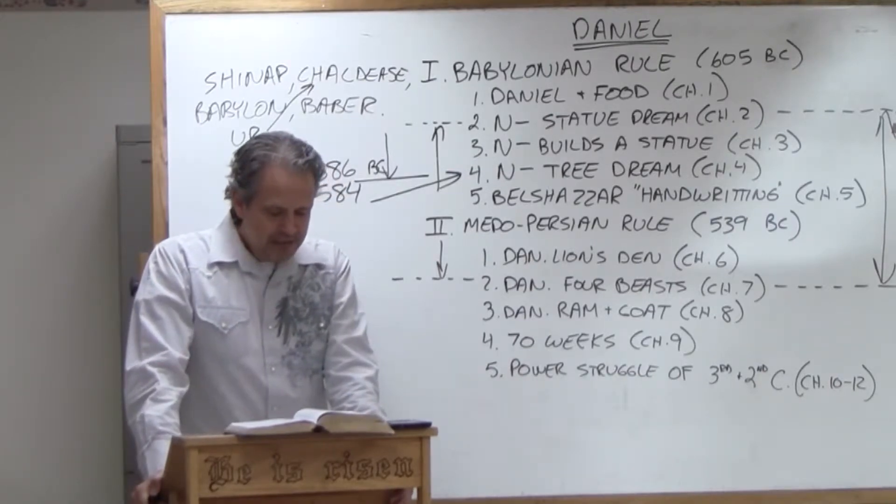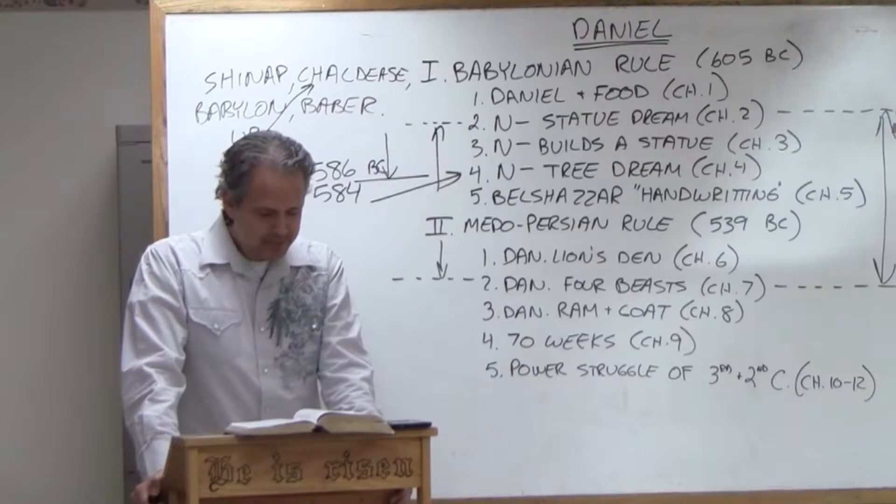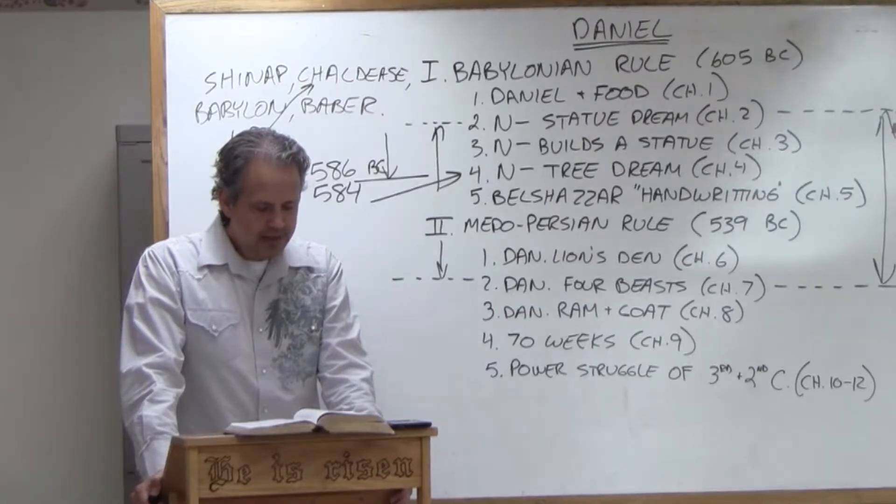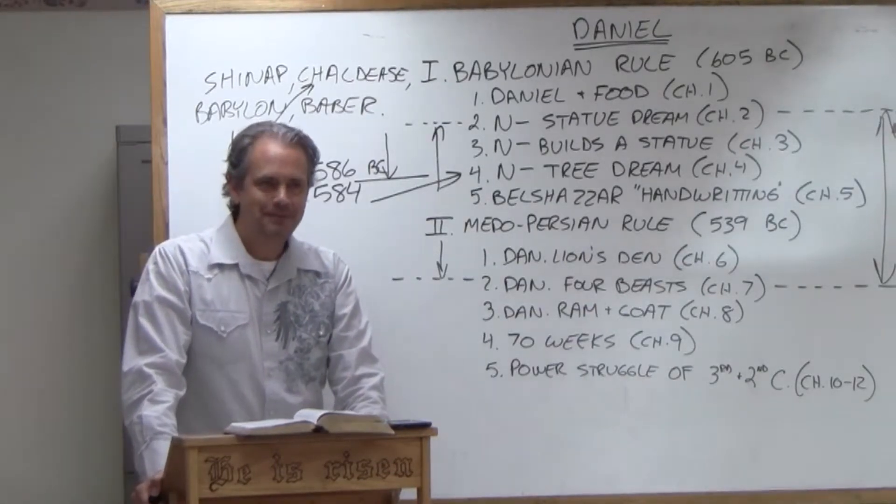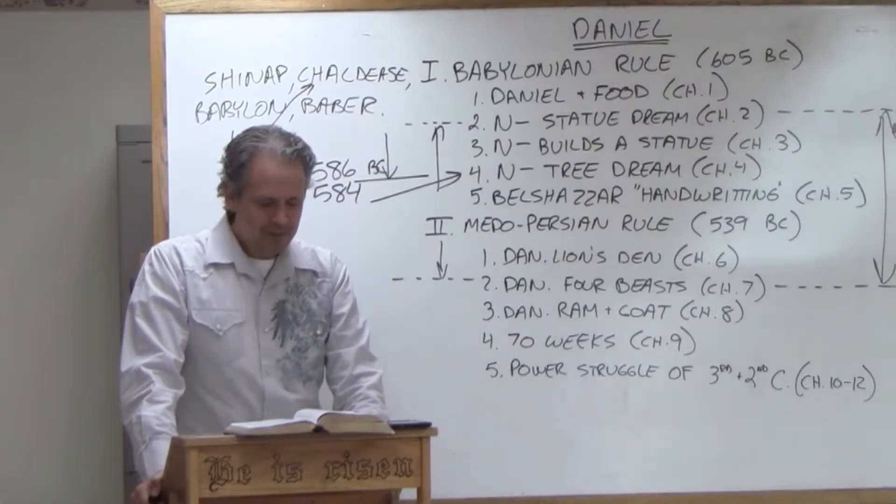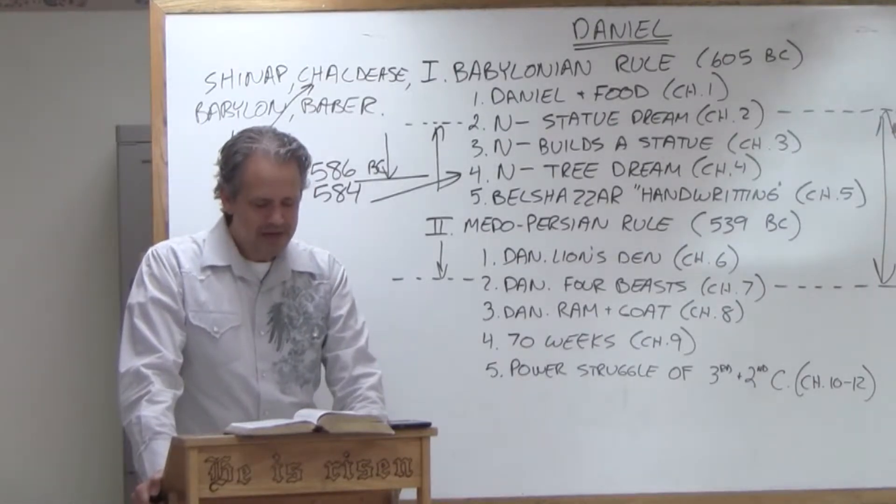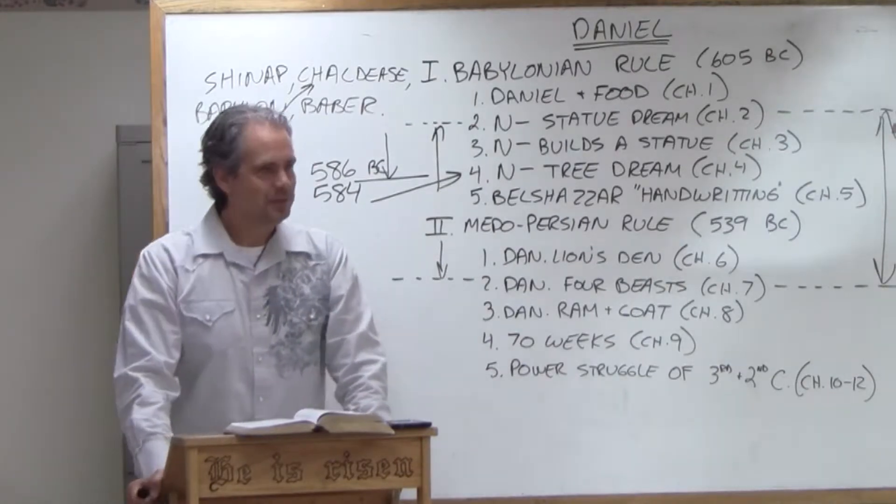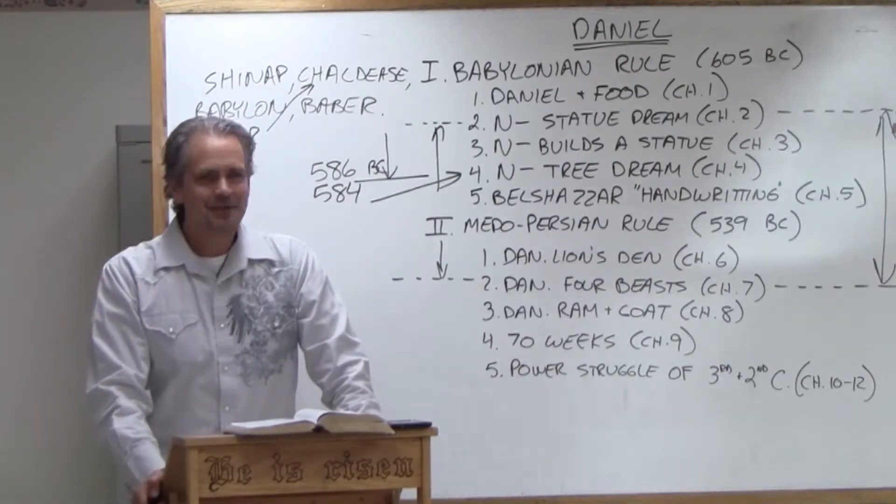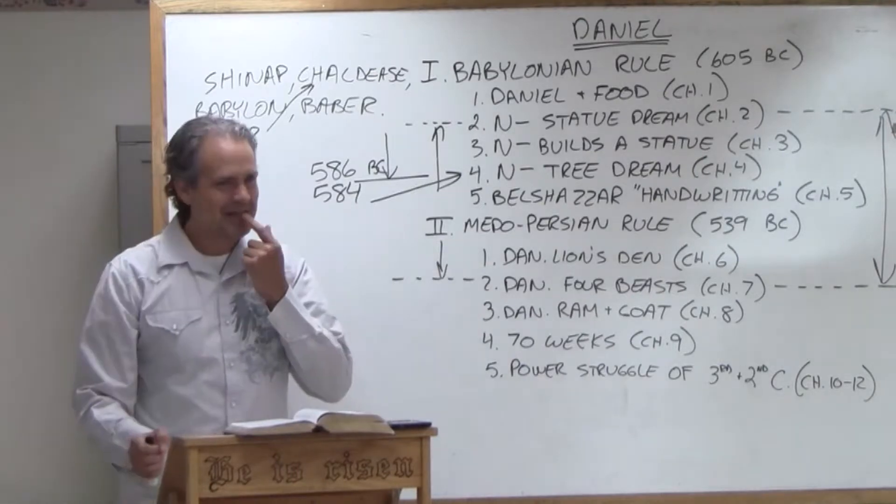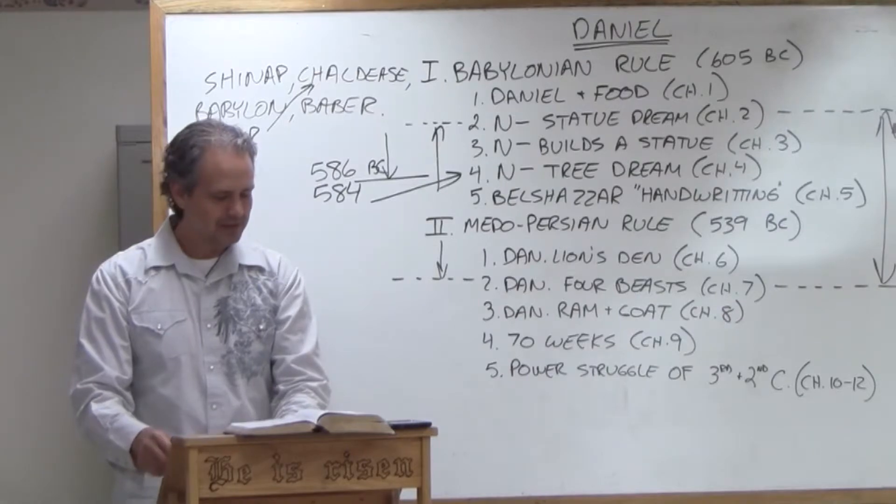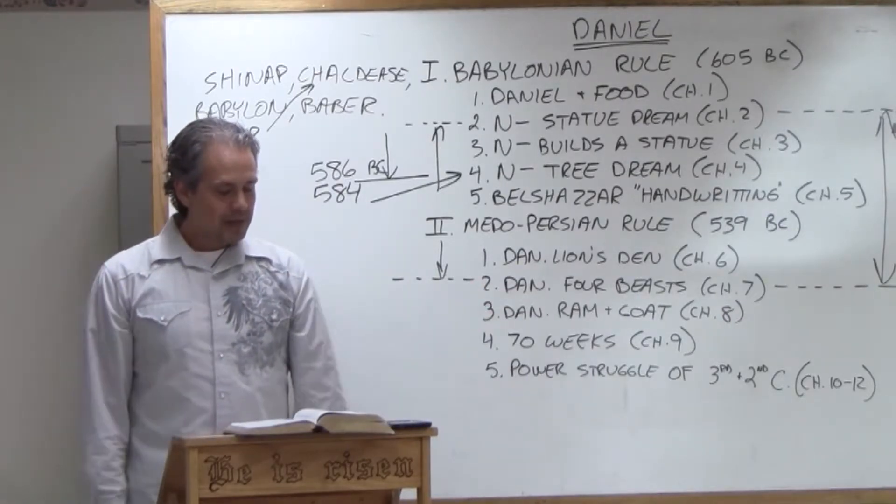Nebuchadnezzar doesn't pay attention. He goes senile for a period of time. And eventually he comes back, gets his senses back, and we read in chapter 4 verse 4, I, Nebuchadnezzar, praise and extol and honor the King of Heaven. All his works are right, all his ways are just, and those who walk with pride he humbles. So did Nebuchadnezzar learn his lesson? Yeah, he gives credence to the God of Heaven, saying that is the one who is all-powerful. After that, we don't hear much.